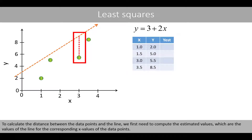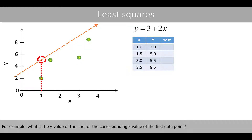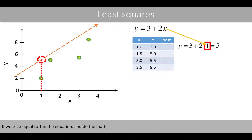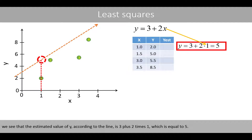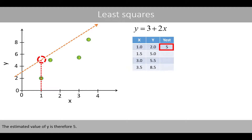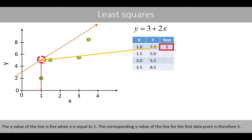To calculate the distance between the data points and the line, we first need to compute the estimated values, which are the values of the line for the corresponding x values of the data points. For example, what is the y value of the line for the corresponding x value for the first data point? If we set x equal to 1 in the equation and do the math, we see that the estimated value of y, according to the line, is 3 plus 2 times 1, which is equal to 5. The y value of the line is 5 when x is equal to 1.